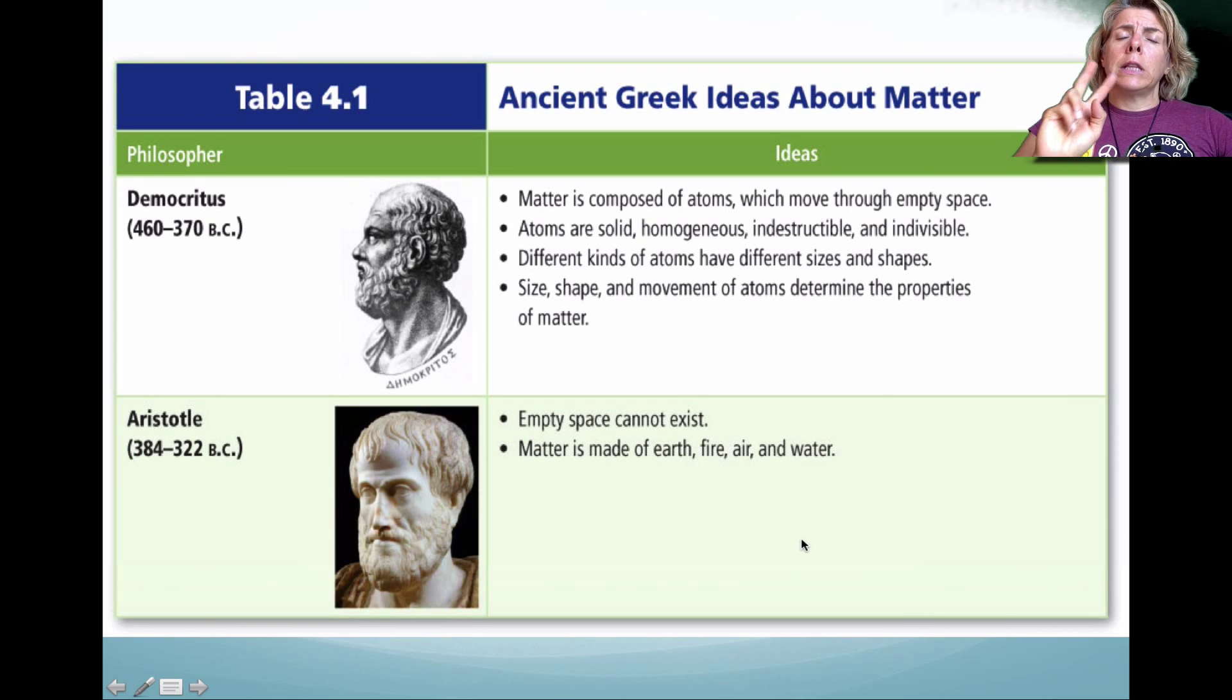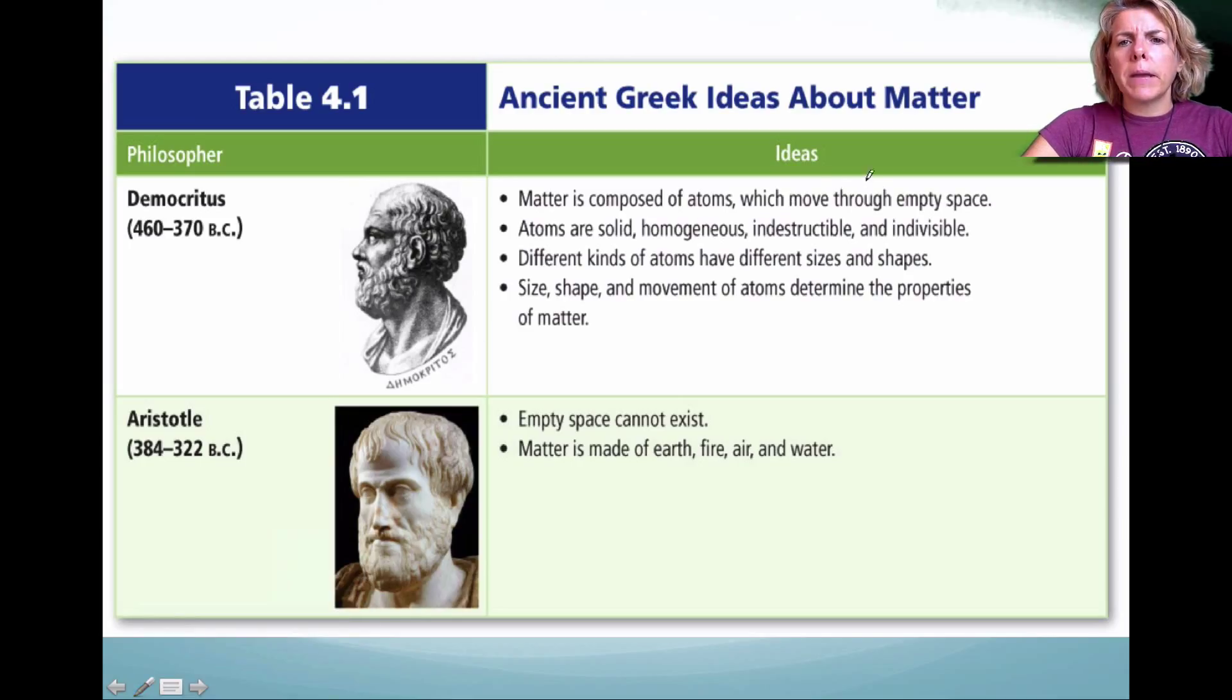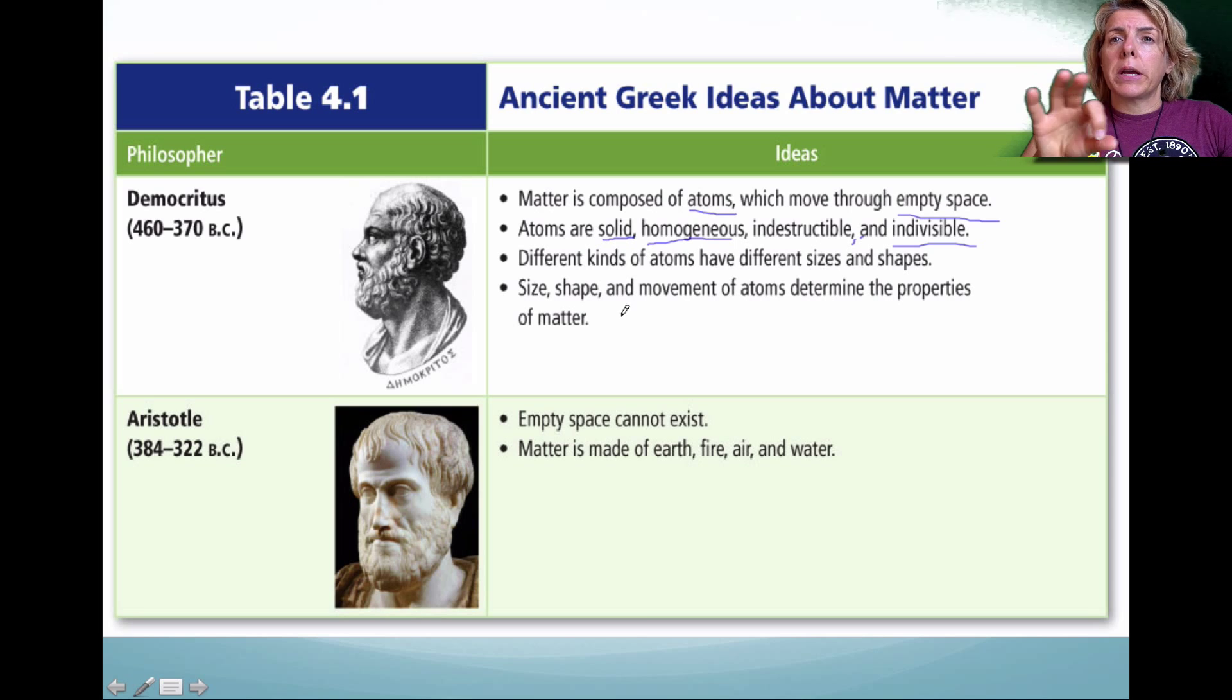There were two leading theorists. The first was Democritus. His belief was that when we're looking at matter, we're looking at what he called atoms, and these atoms can occupy empty space. His revolutionary idea was that they were solid, homogeneous, and indivisible. He called these bits of matter atoms, and you couldn't break them down into something smaller. He also believed there were different sizes and shapes of atoms. He knew there wasn't just one type of atom, there had to be multiples. He also decided that these atoms would determine the properties.